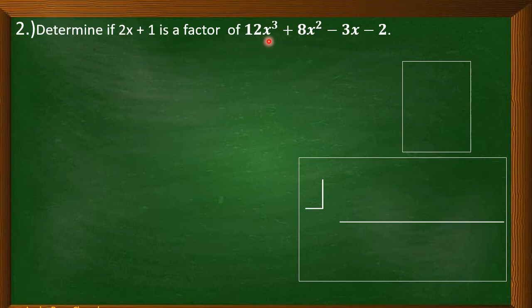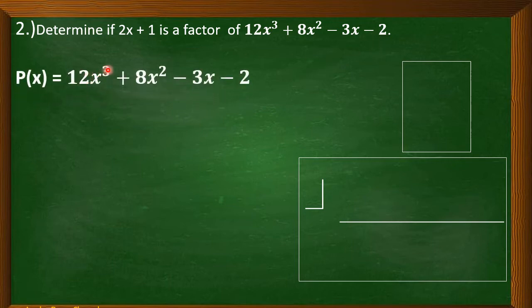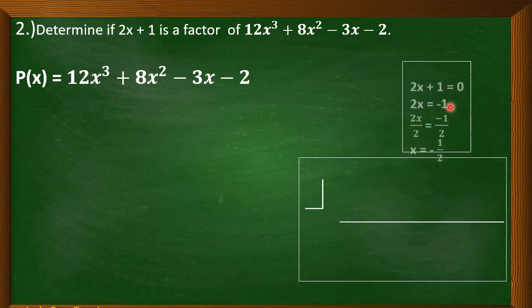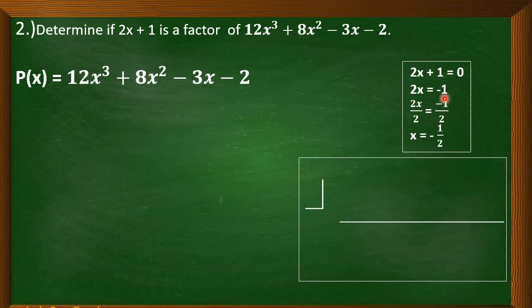Now let's have the second example. Determine if 2x plus 1 is a factor of 12x cubed plus 8x squared minus 3x minus 2. We have to solve for x. We copy 2x plus 1, equate it with 0, and solve for x. So 2x plus 1 equals 0; 1 transposed gives negative 1. Dividing both sides by 2 gives x equals negative 1 half. We will now substitute x by negative 1 half.